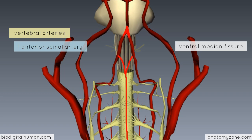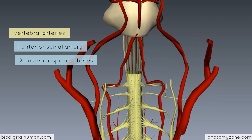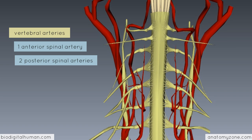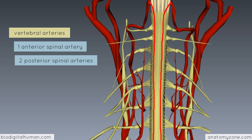The other two vertical vessels are the posterior spinal arteries — and there are two of them. Rotating the model to look at the posterior aspect of the spinal cord, you can see two branches given off from the vertebral arteries which form the two posterior spinal arteries. These run the length of the spinal cord down the posterolateral aspect. So you have one anterior spinal artery and two posterior spinal arteries — three vertical arteries originating in the cranial cavity and descending the length of the cord.